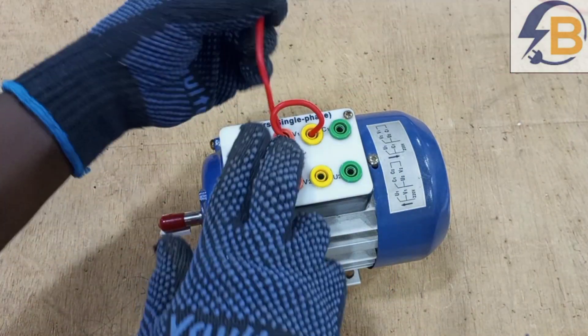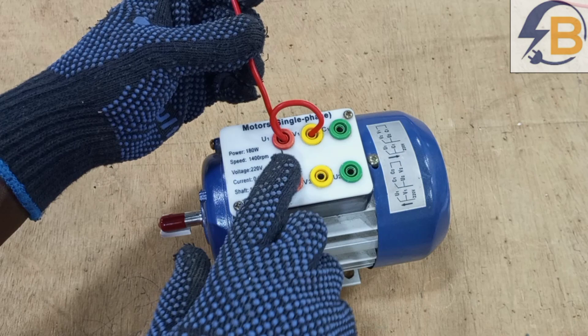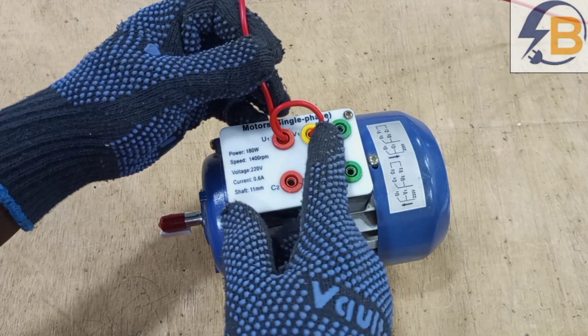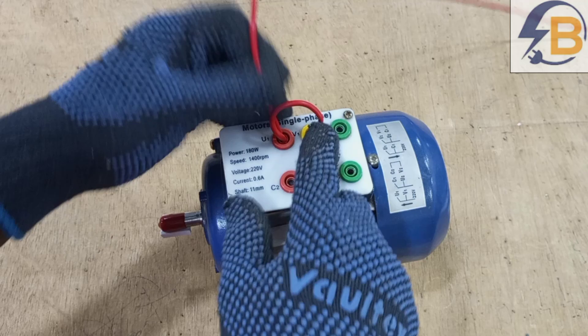So our first line connects to U1 like this. So this is live and that connects to U1. U1 is already linked with V1.